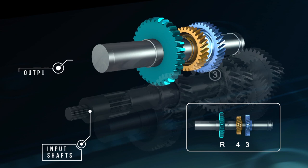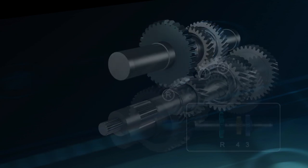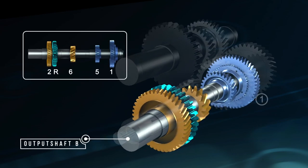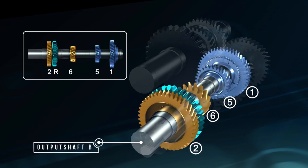This DCT uses two output shafts mounted in parallel to transfer torque from the six forward gears to the final drive assembly. Output shaft A houses third, fourth, and reverse speed gears, while output shaft B holds first, fifth, sixth, and second speed gears.